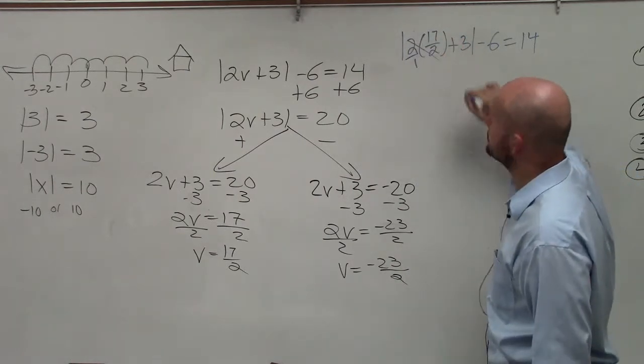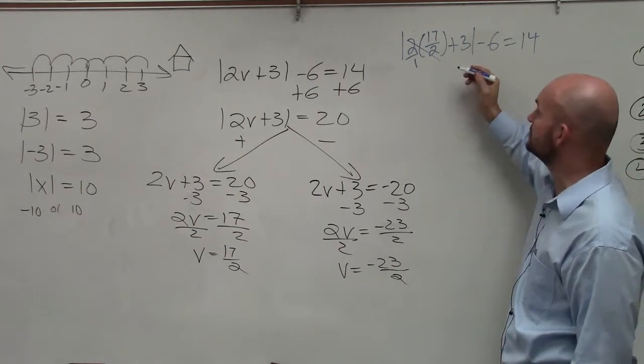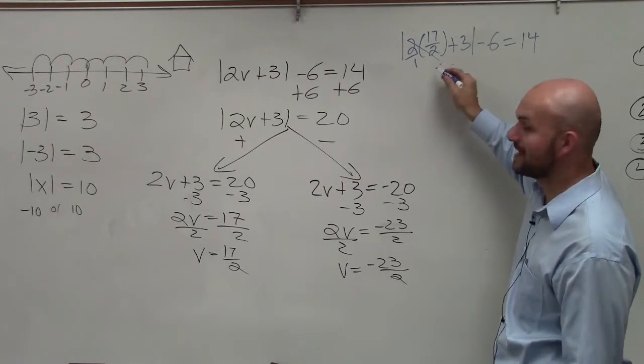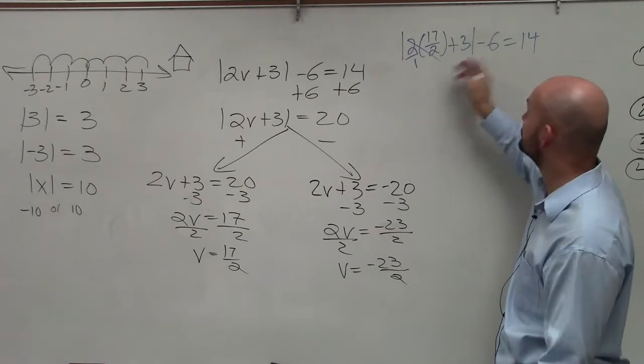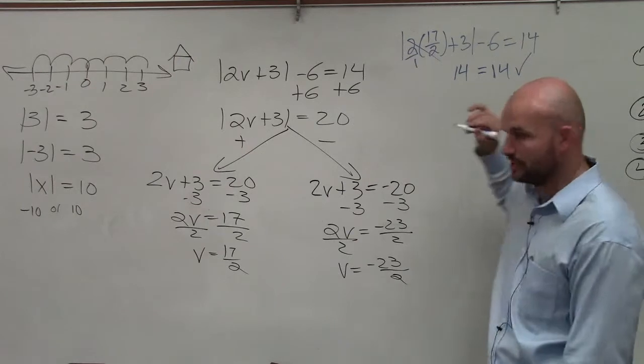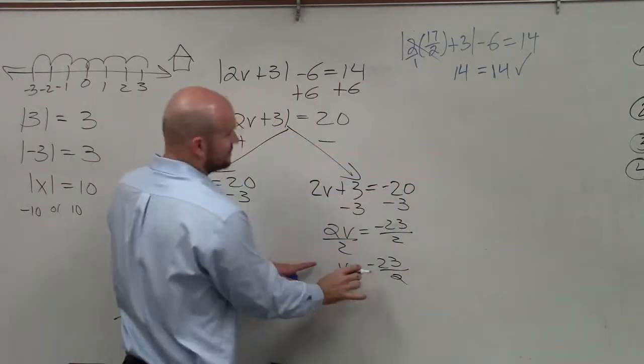So the 2's divide to 1. So I'm left with 17 plus 3, which is 20. Absolute value of 20 is 20. 20 minus 6 is 14, which is equal to 14, which is good. Now let's go and check the other solution.